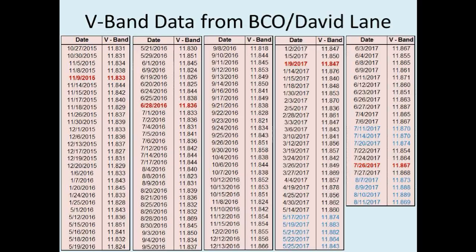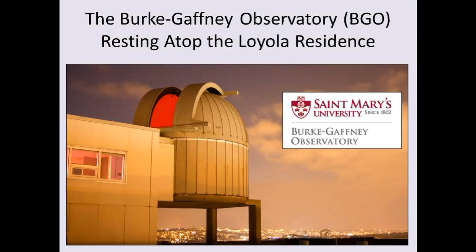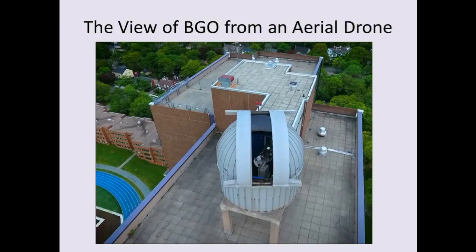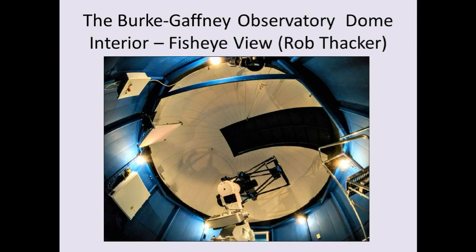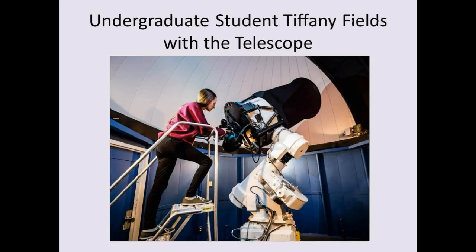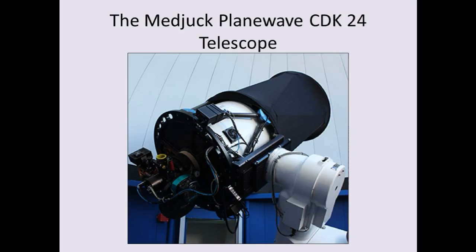For our second topic, we finalized our equation for the accelerating long-term dimming curve of Tabby Star and converted it to calculate the visual magnitude in the V-band. What you see here is data that David Lane, otherwise known as LDJ, posted on AAVSO, going all the way back to October 27th of 2015. The vast majority of this data was taken from the Burke Gaffney Observatory on the campus of St. Mary's University in Nova Scotia, Canada. Here are some photos showing the sophistication of that observatory — an aerial view, an inside view of the dome interior, and the telescope used to make the measurements.